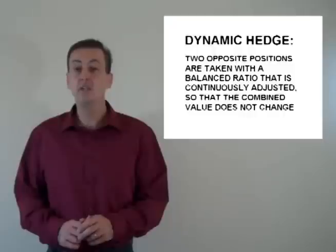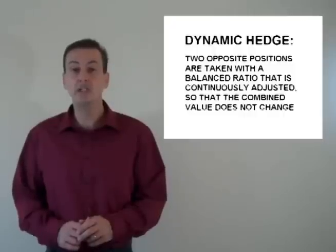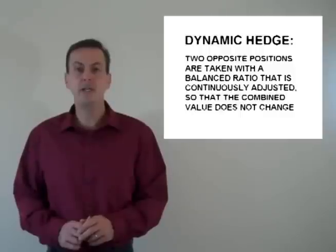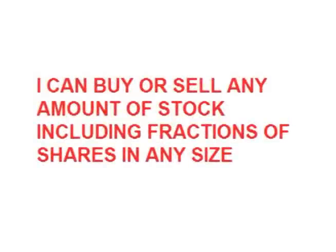As the market moves, it is theoretically possible to keep readjusting the size of one of the two positions so that the two positions remain perfectly hedged or balanced, and one position always goes up or down the exact opposite amount of the other position. For example, a broker that lets you buy or sell not just whole shares of stock, but fractions of shares as well — any size fraction: one-tenth, one-twenty-fifth, one-ninetieth, any size.